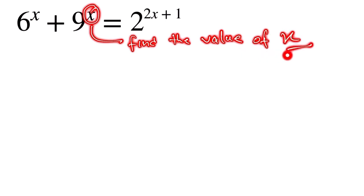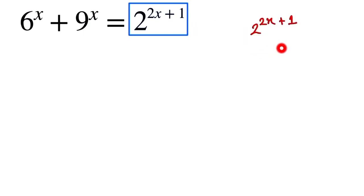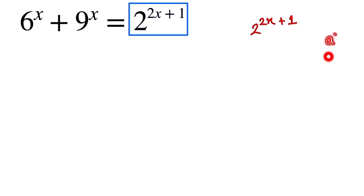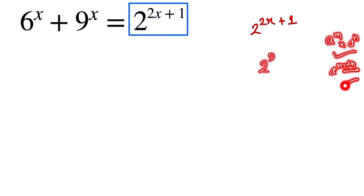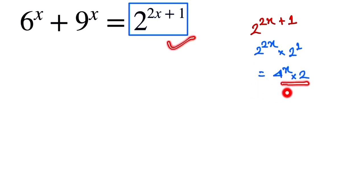First, we notice the part 2 to the power 2x plus 1. Using the power rule, where a to the power m into a to the power n equals a to the power m plus n, this can be broken down as 2 to the power 2x into 2 to the power 1, which can be written as 4 to the power x into 2.